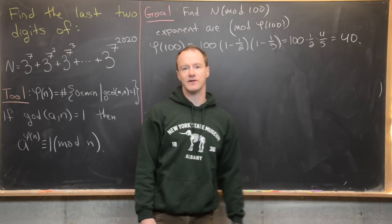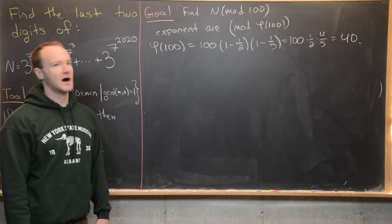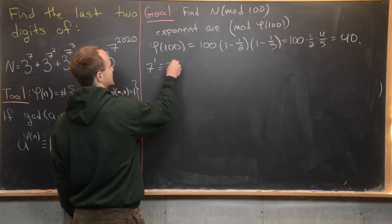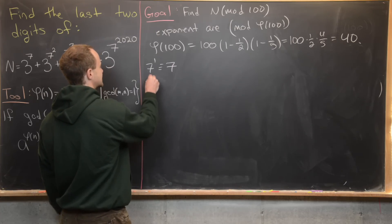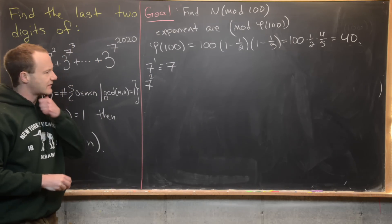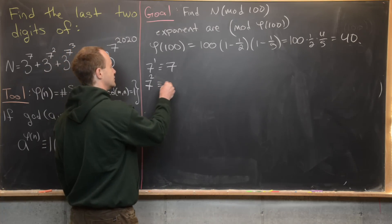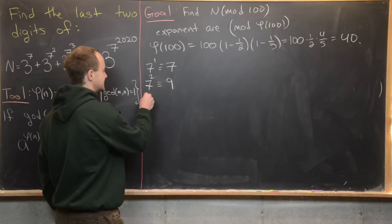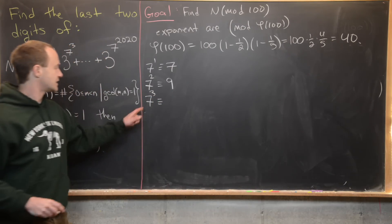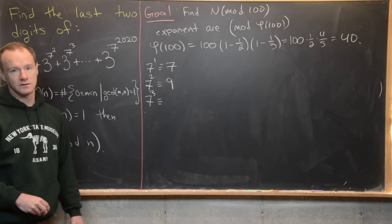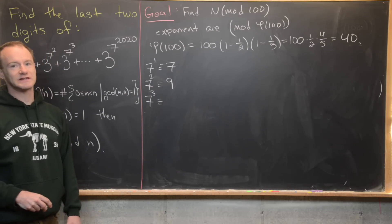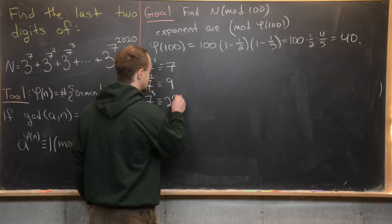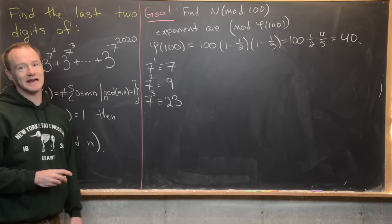All our exponents are powers of 7, so let's look at powers of 7 mod 40. We have: 7 to the first is congruent to 7 mod 40. Then 7 squared equals 49, congruent to 9 mod 40. Then 7 cubed is congruent to 7 squared times 7, so 9 times 7 equals 63, and 63 mod 40 is 23.